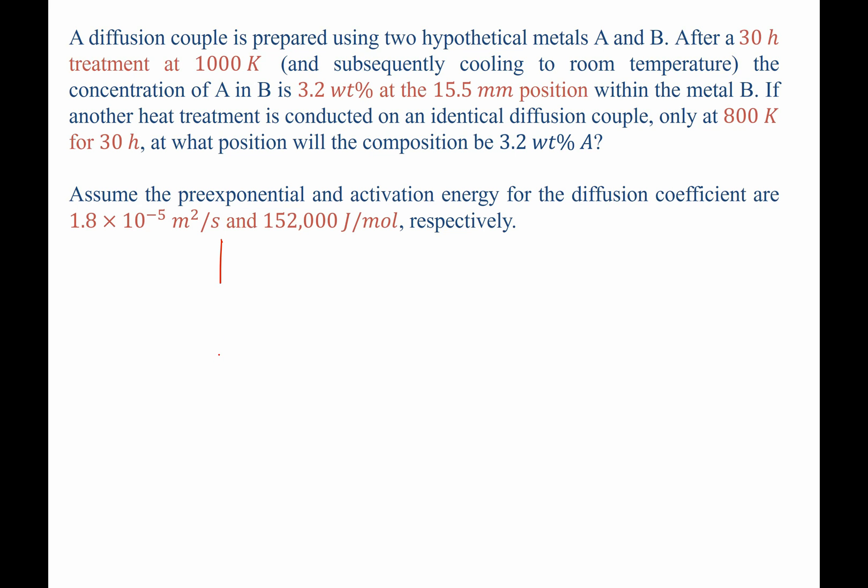Any time we're talking about a diffusion couple, we can plot the weight percent A as follows. In the initial material, metal A is bonded to metal B, but there's been no heat treatment. So if we had 100 percent up here, A would initially look like this.